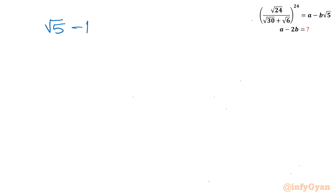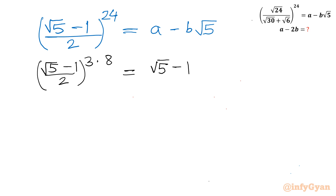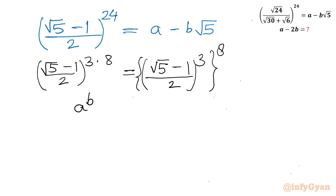Let us put this value in. I will write ((root 5 minus 1) over 2) whole power 24, and the RHS is a minus b times square root 5. Now I will consider 24 as 3 times 8, so I can write it as ((root 5 minus 1) over 2) whole cubed, whole power 8. The property used here is: a to the power (b times c) equals (a to the power b) whole power c.